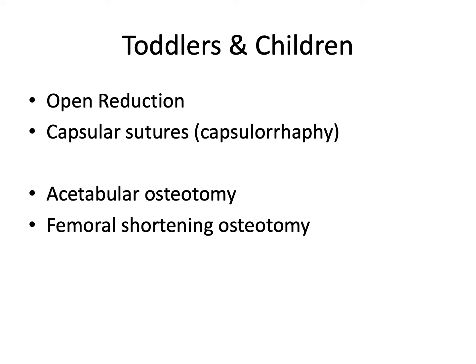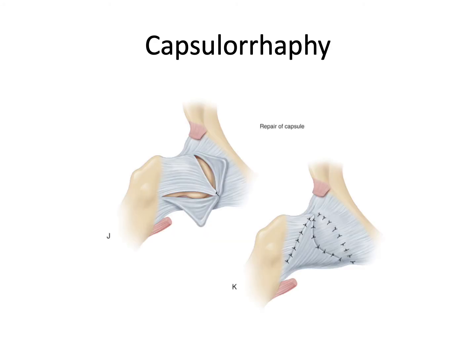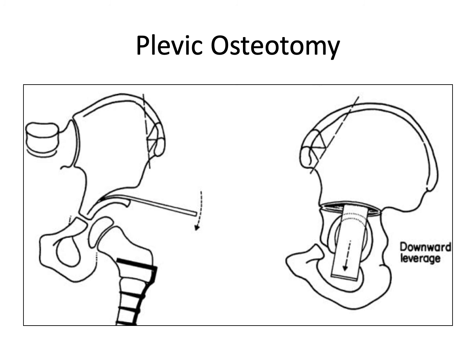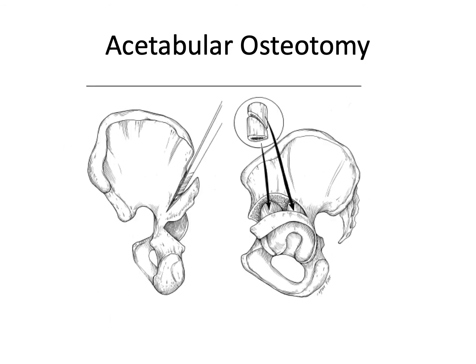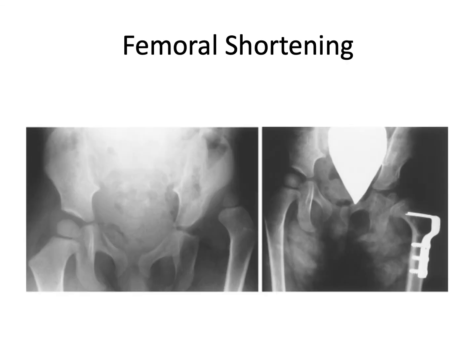After the age of 18 months, usually an open reduction is needed to lengthen the shortened structures and remove the pulvinar sitting within the empty acetabulum. Capsulorrhaphy is needed to remove the redundancy and tighten the capsule after reduction of the hip joint. Acetabular osteotomy is needed in older age to correct the orientation of the acetabulum and provide sufficient coverage of the femoral head to distribute weight and prevent re-dislocation, typically using a wedge-opening osteotomy with a bone graft from the iliac wing or femur inserted in the anterolateral aspect. Femoral shortening is needed in children older than 2 years, and the removed segment can be used as a graft in the wedge-opening acetabular osteotomy.